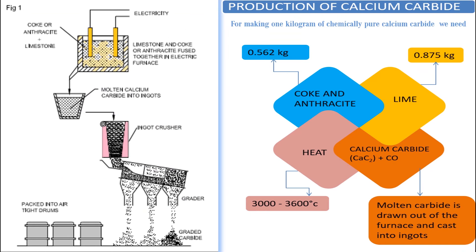Calcium carbide is produced in an electric furnace by smelting coke and lime in the right proportion. It takes less than one kilogram of calcium and carbon to produce one kilogram of calcium carbide. With the heat generated in the furnace, lime and coke turn to a liquid compound called calcium carbide.